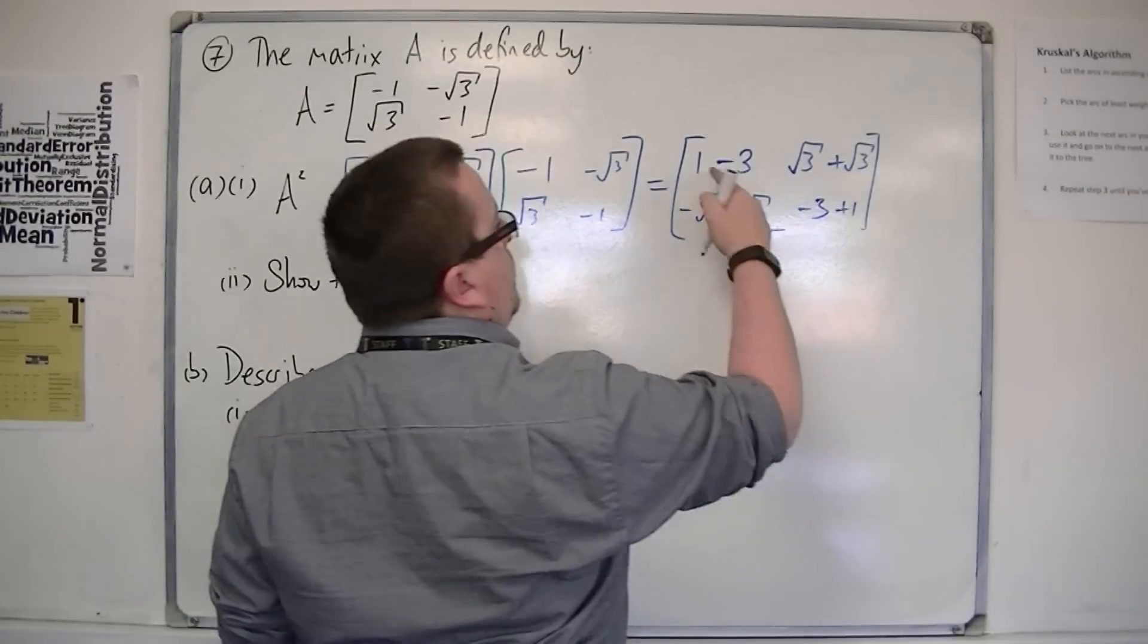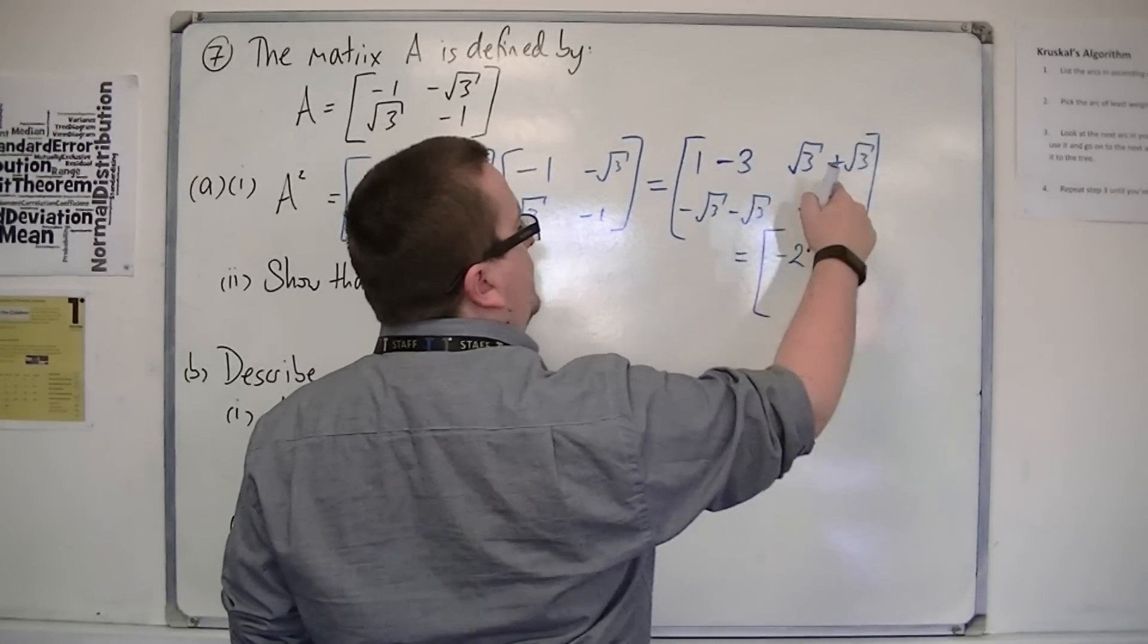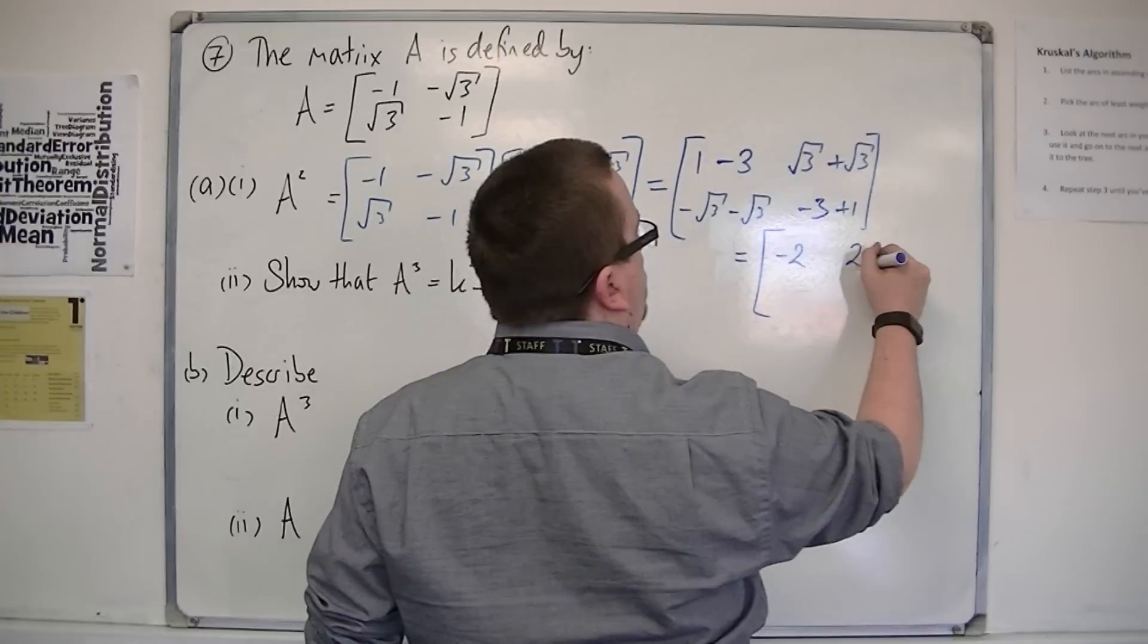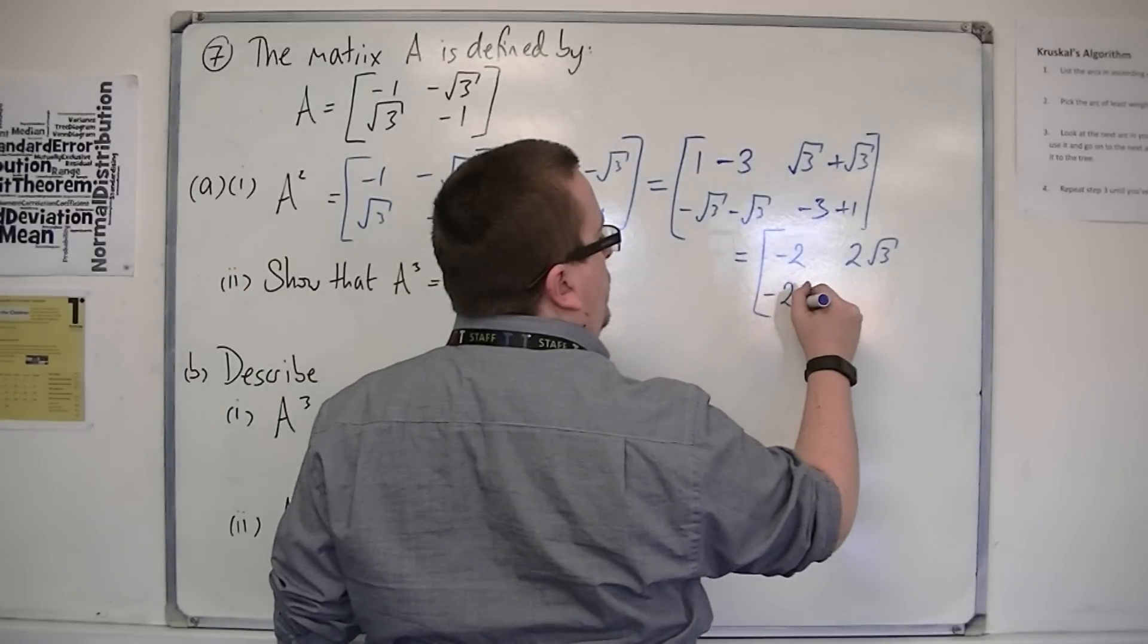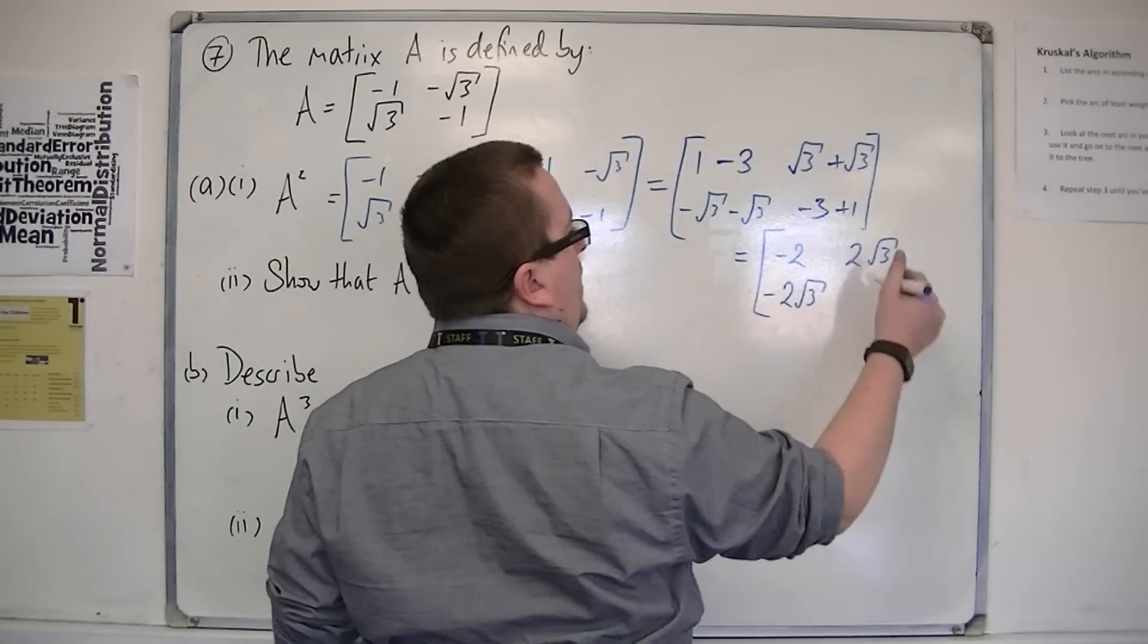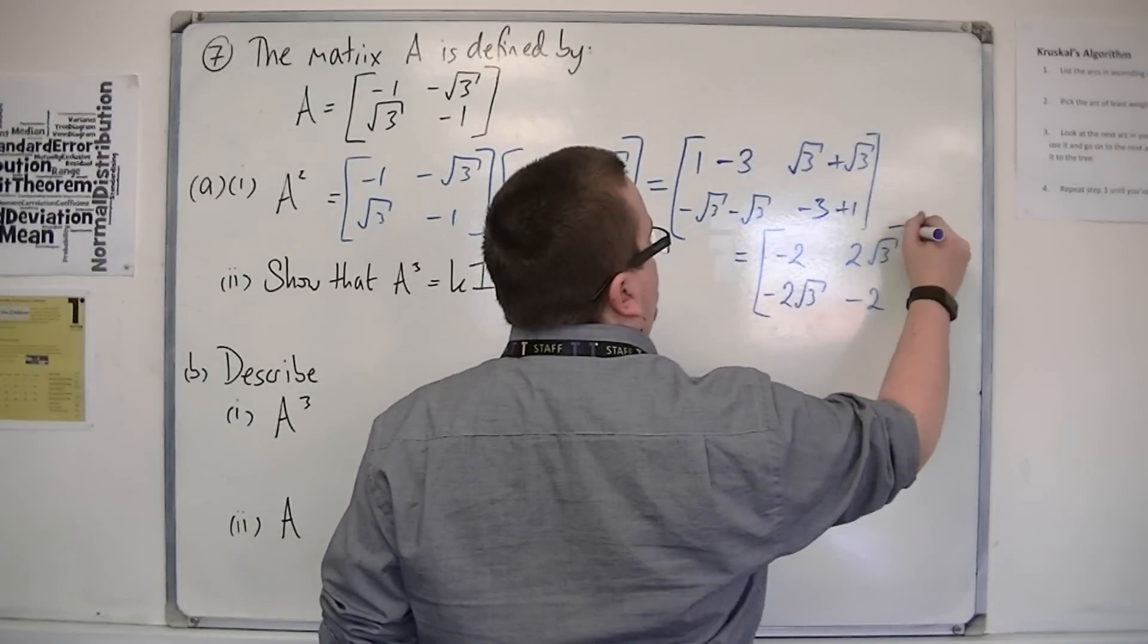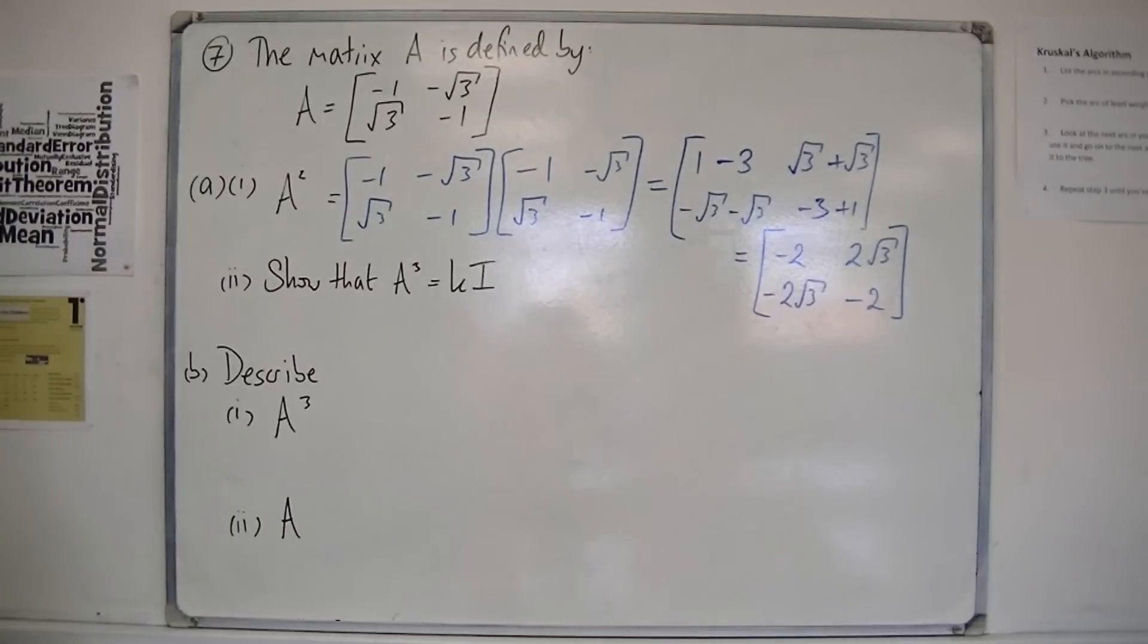So, in the end, we have 1 take away 3 is minus 2. Root 3 plus root 3 is 2 root 3. Minus root 3 take away root 3 is minus 2 root 3. And minus 3 plus 1 is minus 2. So, that's your A squared.